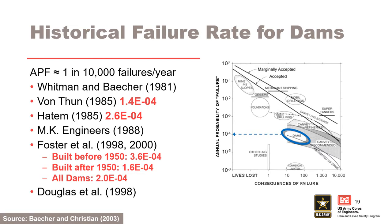Dams have failed at a rate of about 1 in 10,000 per dam year of operation depending on the failure mode and age of the structure. The failure rate in the University of New South Wales database after 1950 is about half the rate before 1950. Such statistics consider all dams worldwide regardless of design and construction attention. For a specific dam, think about factors that make a failure mode more or less likely to occur than this historical rate.